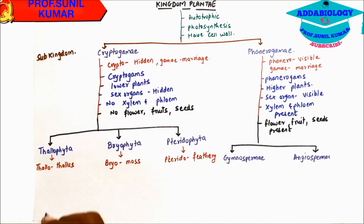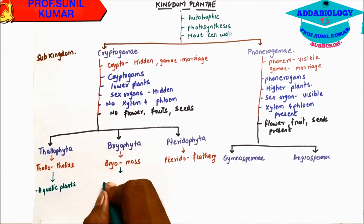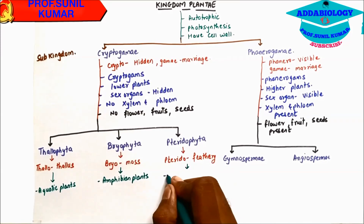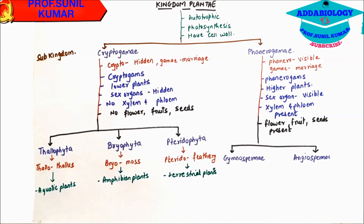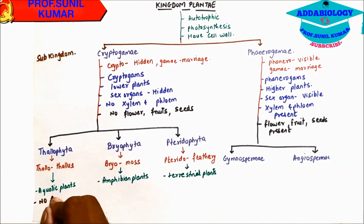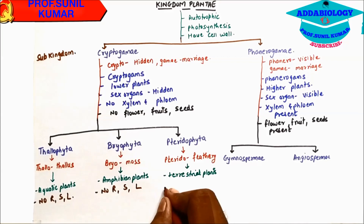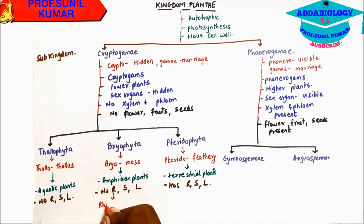Thallophyta are all aquatic plants, Bryophytes are all amphibian plants, and Pteridophytes are terrestrial plants. Amphibian plants means they require water for fertilization. In Thallophyta, there is no root, stem, or leaf. Bryophytes also have no root, stem, or leaf — instead of root they have Rhizoids which work like roots, for stem they have a stem axis, and for leaf they have leafy appendages. Pteridophytes have root, stem, and leaf.